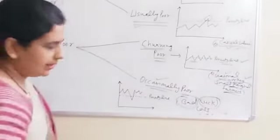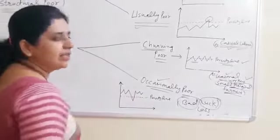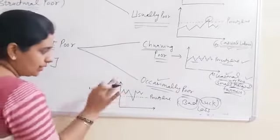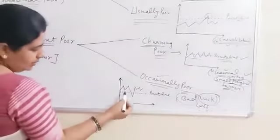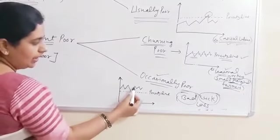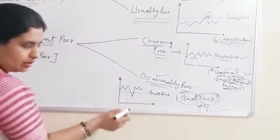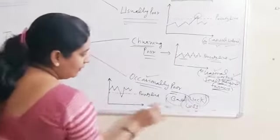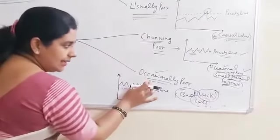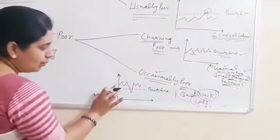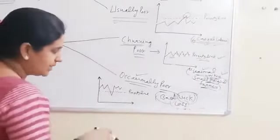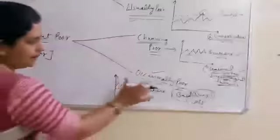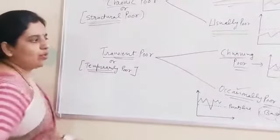The fourth and last category is called occasionally poor. Occasionally they are poor. See the diagram — they fall above the poverty line most of the time. But due to some bad luck or some loss, they fall below the poverty line. So occasionally poor most of the time fall above the poverty line, but due to bad luck or losses in business they fall below it. These two are the categories of transient poor, also called temporary poor.